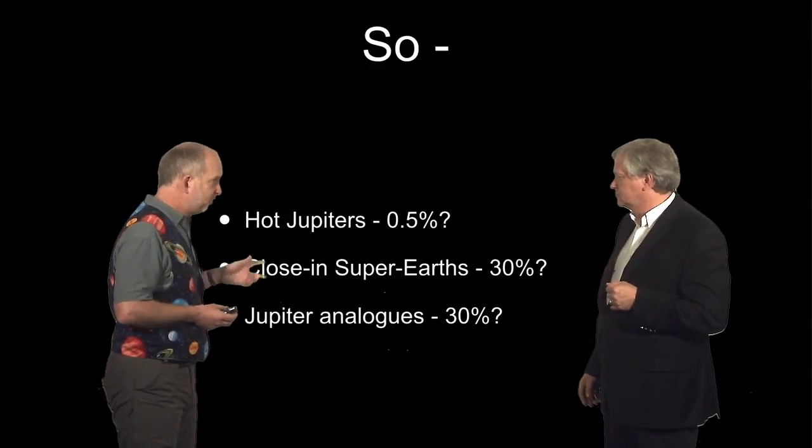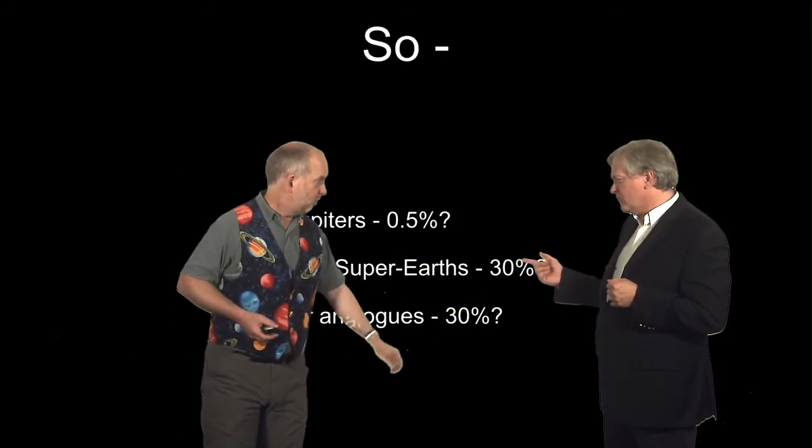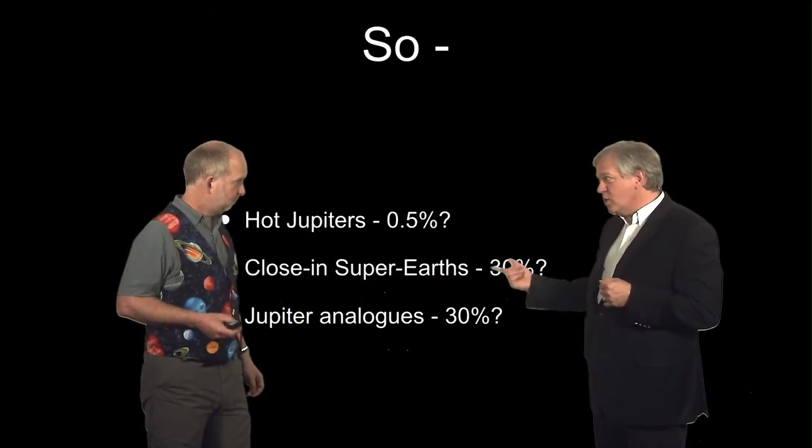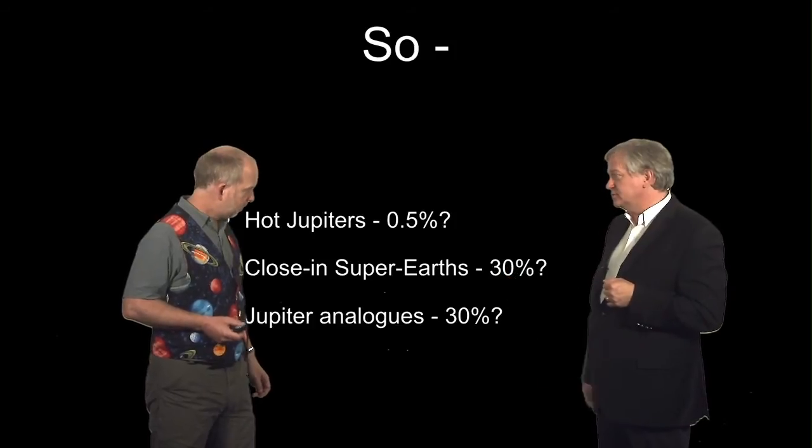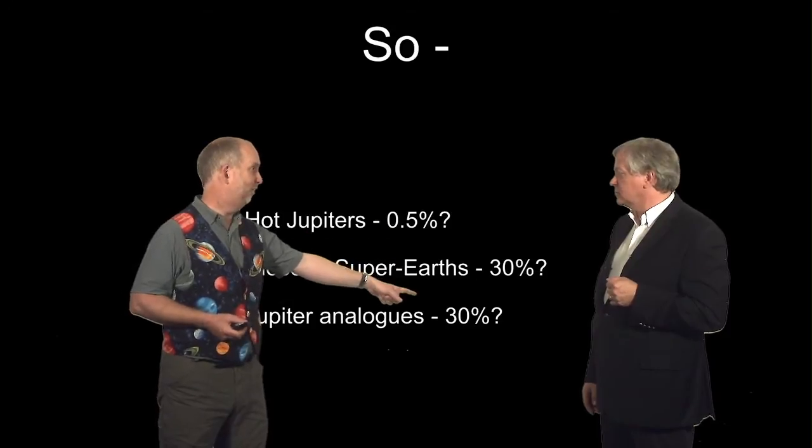But then we've got the close-in super-Earths seen by Kepler, which is maybe 30%. So those are very common. Yeah. And we didn't know at all about them a few years ago. Yeah. And of course these ones are often the same stars as this one. So for example, like Upsilon Andromeda has one of these and one of those.